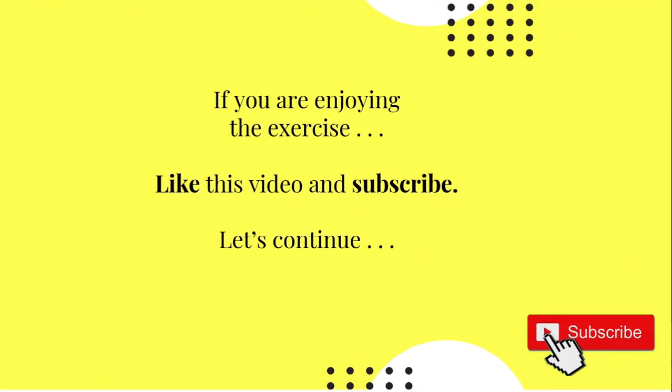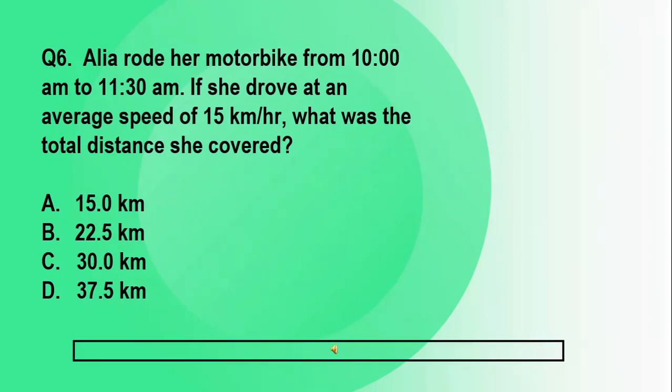Question number six. Aaliyah rode her motorbike from 10 a.m. to 11:30 a.m. If she drove at an average speed of 15 km per hour, what was the total distance she covered? A. 15 km. B. 22.5 km. C. 30 km. D. 37.5 km. You have 5 seconds, but I'll give you 15 seconds because you need to compute for this item.